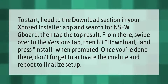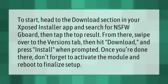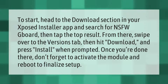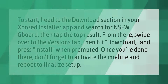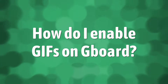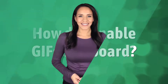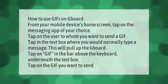To start, head to the download section in your Xposed Installer app and search for NSFW Gboard. Tap the top result, then swipe over to the Versions tab, hit Download, and press Install when prompted. Once you're done, don't forget to activate the module and reboot to finalize setup.